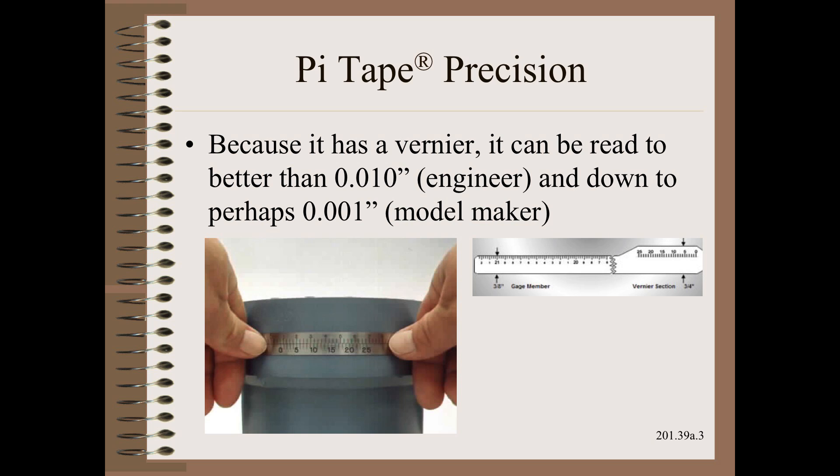A true Pi Tape has a vernier scale. In the hands of a casual engineer or technician, it can read to better than ten thousandths of an inch in good conditions. However, that same tape in the hands of a skilled tool and die or model maker, the brain surgeons of the mechanics world, can read down to perhaps one thousandths of an inch.